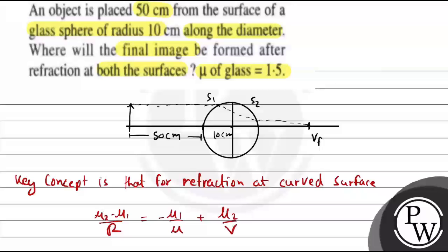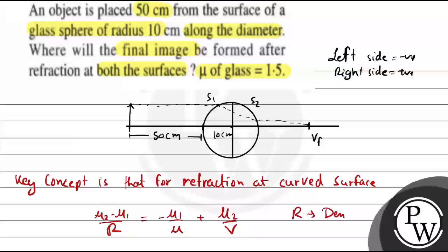Here we are using the conventional sign convention: the left side is negative and the right side is positive. If we are using the left side of the distance, we will take negative, and the right side we will take positive. This formula applies for a rarer to denser medium. When going from denser to rarer medium, mu1 and mu2 will be exchanged.